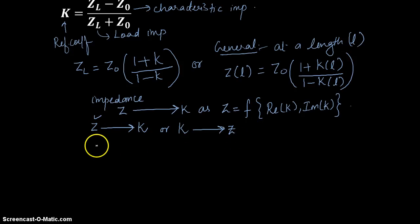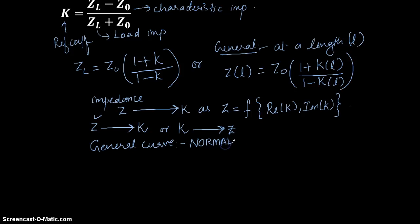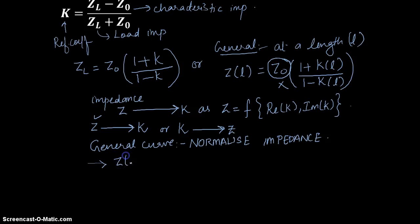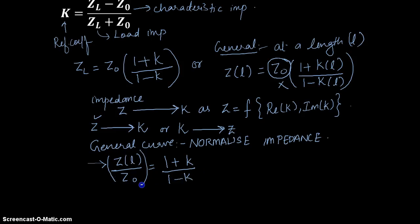For us to get a general curve we need to do something called normalizing the impedance value. This is very simple. All we are trying to do is take the characteristic impedance value Z naught and remove it from the right-hand side. So if you take ZL divided by Z naught, it becomes 1 plus k divided by 1 minus k. This term is called the normalized impedance.